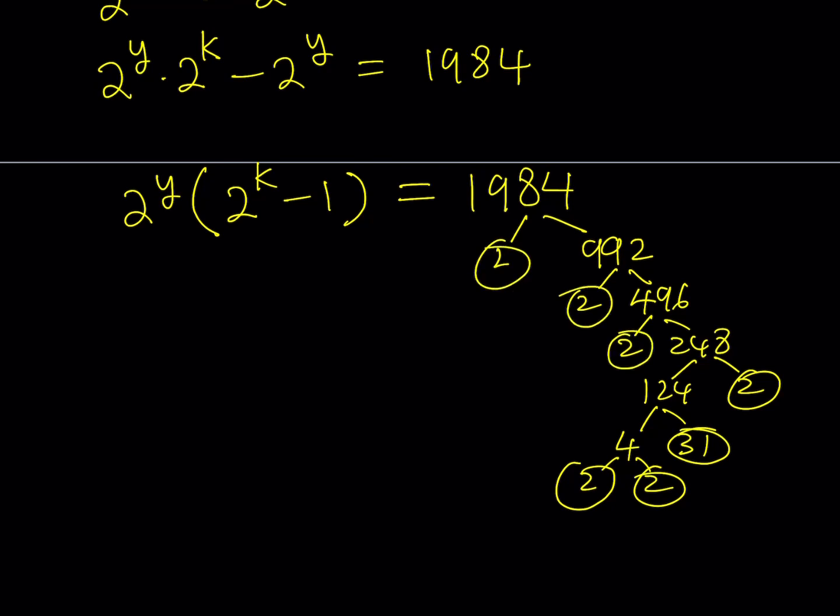But notice that we're getting a lot of 2s here. How many 2s? 6 2s, right? So we can basically write this as 2 to the power y multiplied by 2 to the power k minus 1 is equal to 1984, which can be written as 2 to the power of 6 multiplied by 31.